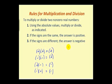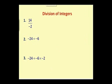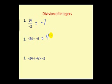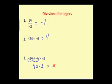The same rules apply to division. A positive divided by a negative is negative: 14 divided by 2 is 7, so the answer is negative 7. A negative divided by a negative is positive: 24 divided by 6 equals 4, giving positive 4. For a combined expression, we work two at a time — a negative divided by a negative gives positive 4, then positive 4 times negative 2 gives negative 8.